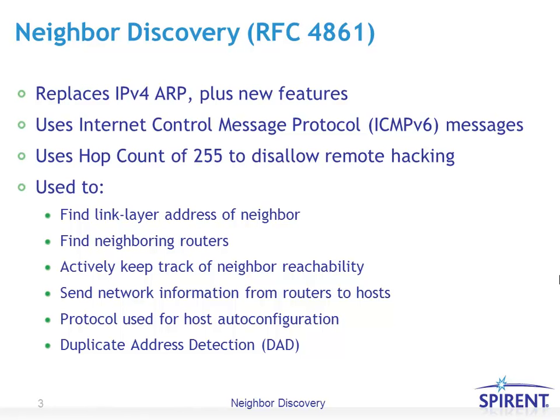Neighbor Discovery is used for a variety of features, such as to find the link layer addresses of neighbors — in other words, MAC (media access control) addresses, such as an Ethernet address — to find neighboring routers. In fact, there are special Neighbor Discovery messages that routers can use to announce their presence. It also actively keeps track of neighbor reachability, sends network information from routers to hosts, is used for host auto configuration, and can be used for duplicate address detection, or DAD.